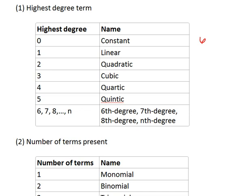If we have the first degree as our highest degree, such as 3x or x plus 9, these are called linear polynomials.